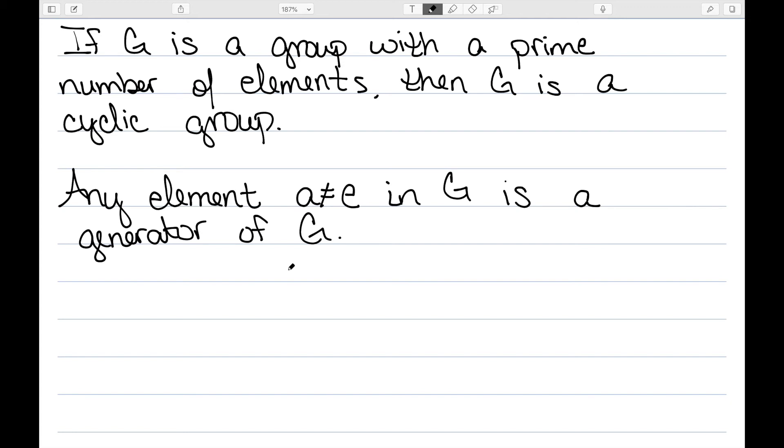So what this is telling us is that there is, up to isomorphism, only one group of any given prime number P.